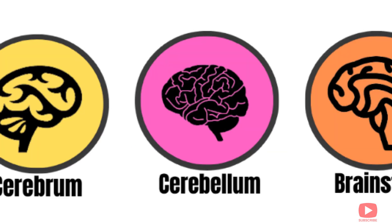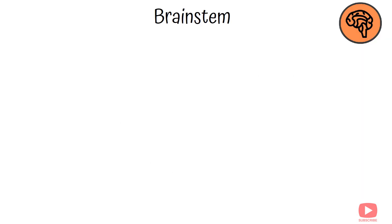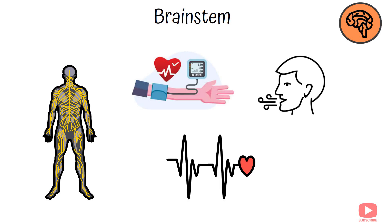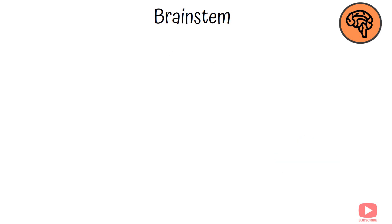Brainstem. The brainstem is the body's life support system, controlling vital functions such as breathing, heart rate, and blood pressure. It connects the brain to the spinal cord and also manages reflexes and basic movements. The brainstem is divided into three parts: the midbrain, pons, and medulla oblongata, each playing a role in controlling essential bodily functions.